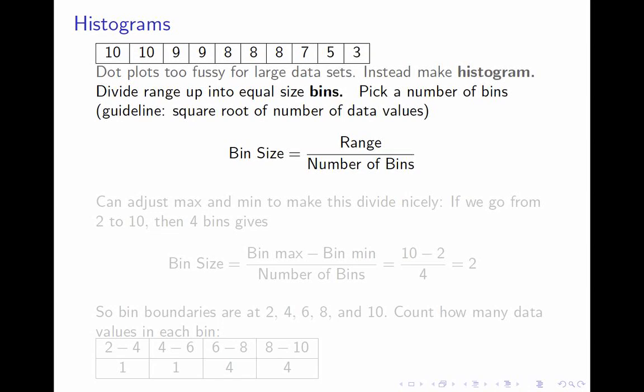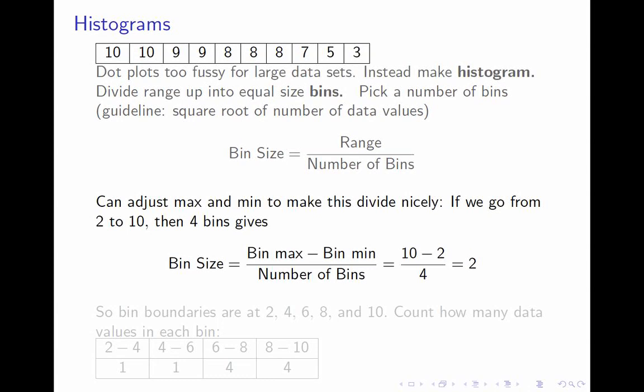But a good rule of thumb is to pick something near to the square root of the number of data values. So if you have 100 data points, 10 is a reasonable number of bins to have. If you have 1,000 data points, somewhere in the 30s. We have 10 data points, so 3 or 4 bins is probably all we can do. Once you've decided the number of bins, which is your choice, then the bin size is going to be the range divided by the number of bins. That way, each bin will be the same size. That sometimes doesn't work out very nicely. You are allowed to increase the maximum or decrease the minimum a little bit, so it all divides evenly.